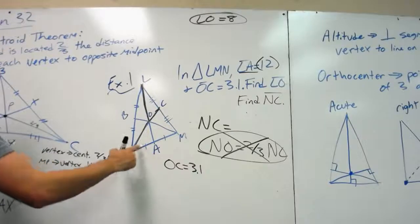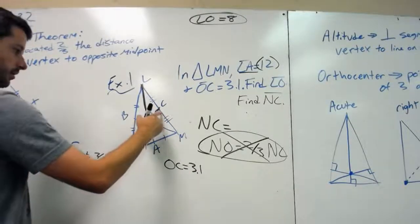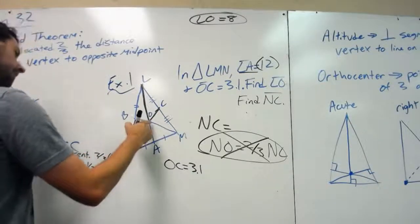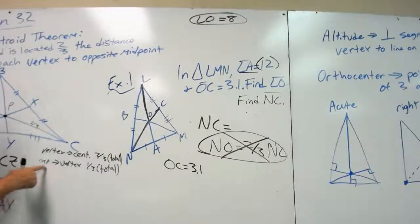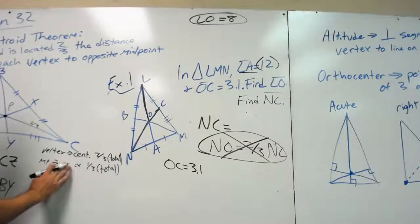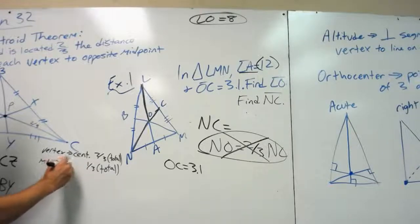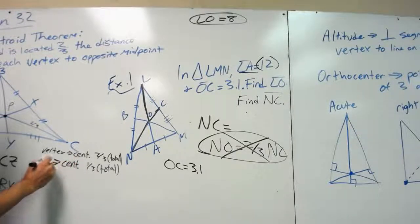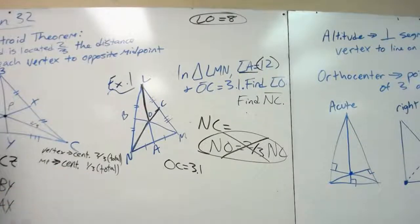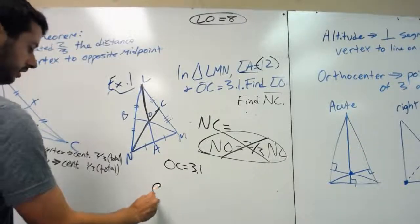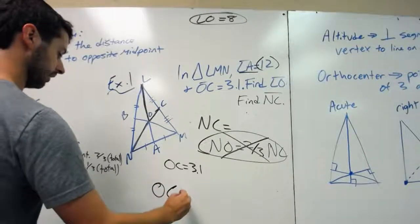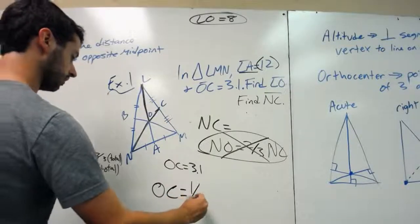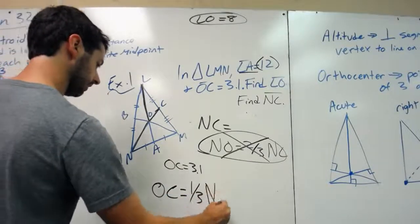So we've got to find a way to use OC. Well, we said that this is two-thirds the distance. What about OC from a centroid to a midpoint? Well, from a centroid to a midpoint, the distance is one-third of the total. So we could say that OC equals one-third of NC.